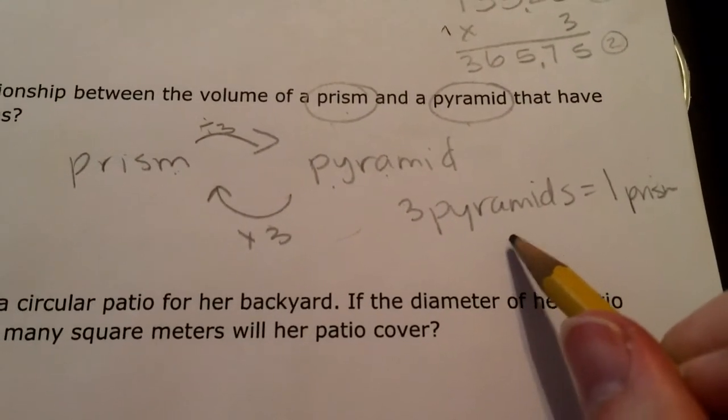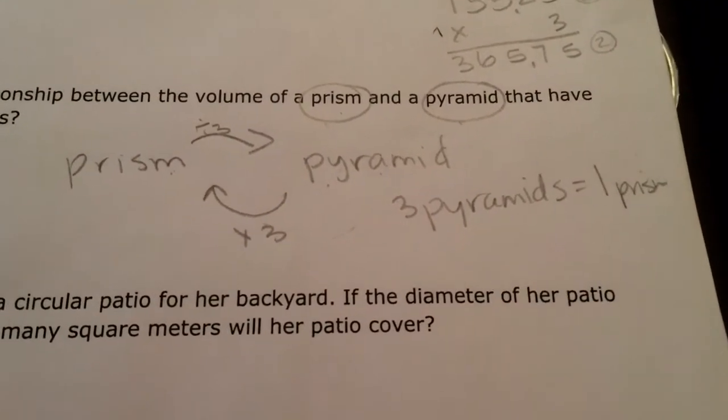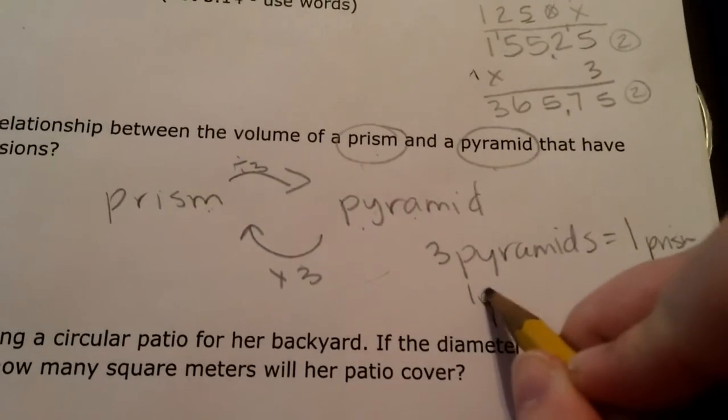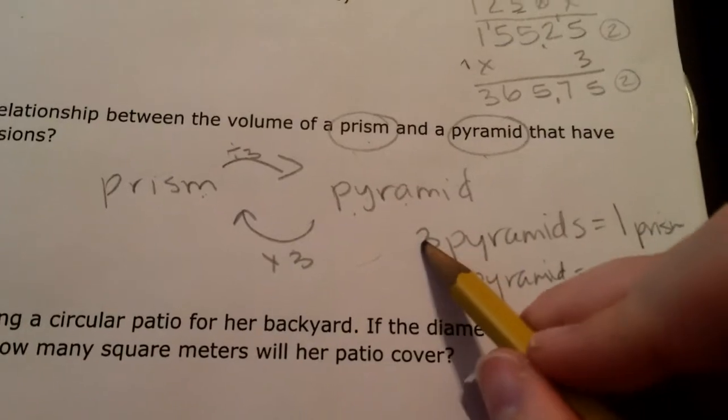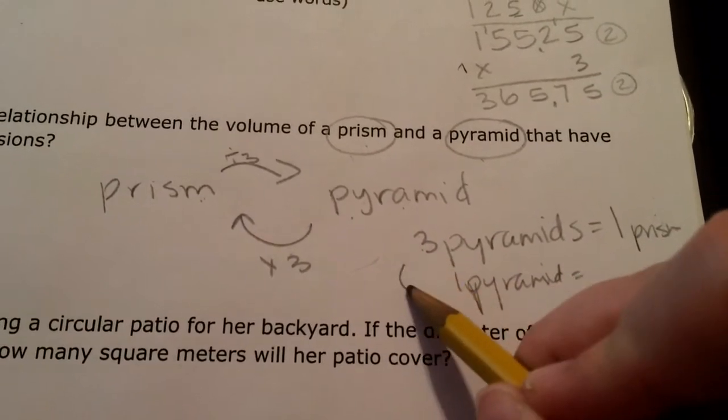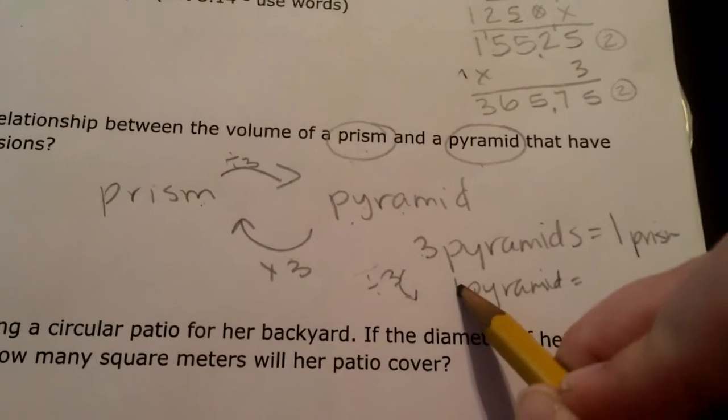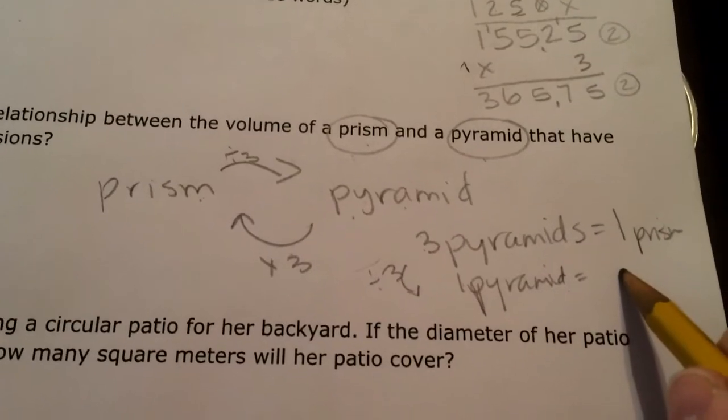Or, if I wanted to think about it as one pyramid - three divided by three gives me one, one divided by three,